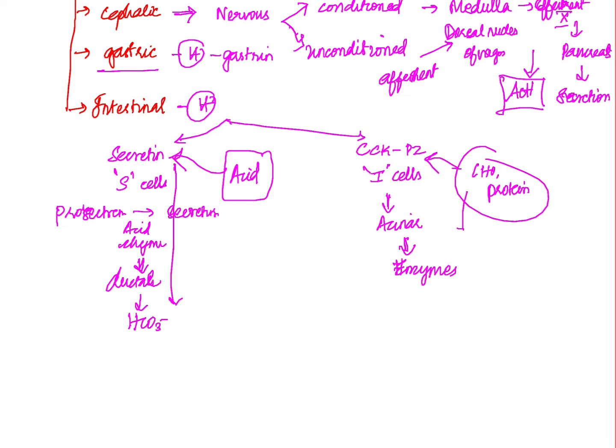Cholecystokinin-pancreozymin is secreted by I cells and stimulates the acinar cells to release more enzymes. Secretin stimulates the ductal cells to produce more bicarbonate. Acid-rich chyme stimulates secretin, which increases bicarbonate secretion. Chyme containing products of carbohydrate, protein, or fat metabolism stimulates cholecystokinin, which in turn stimulates acinar cells to release digestive enzymes.